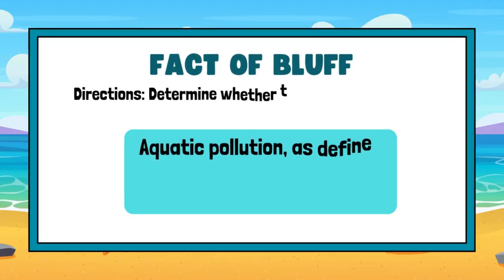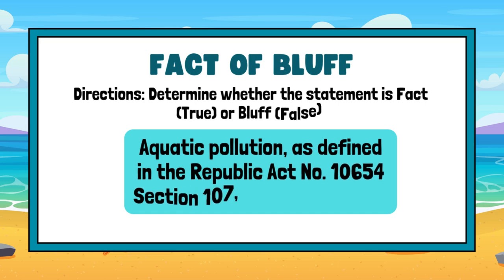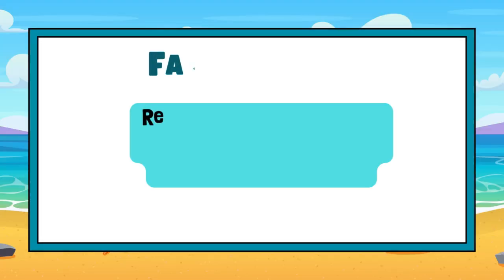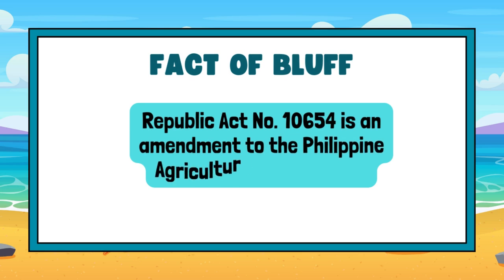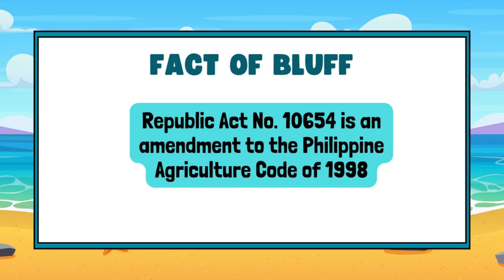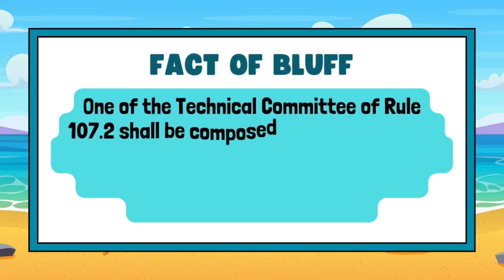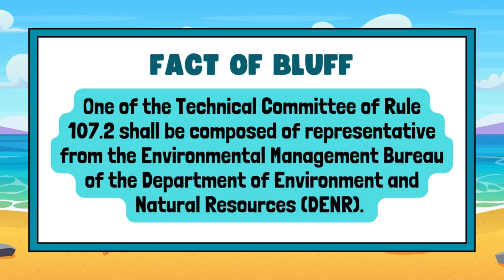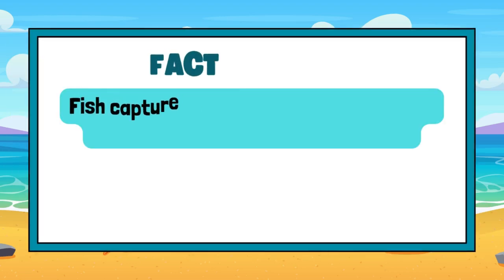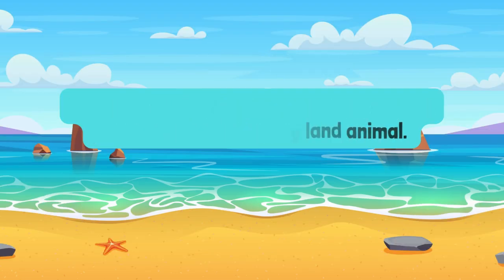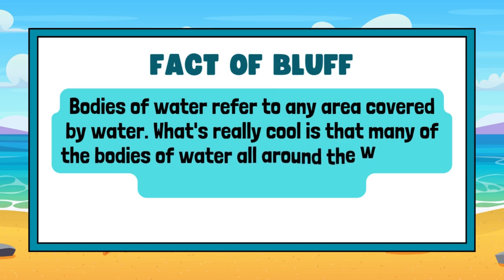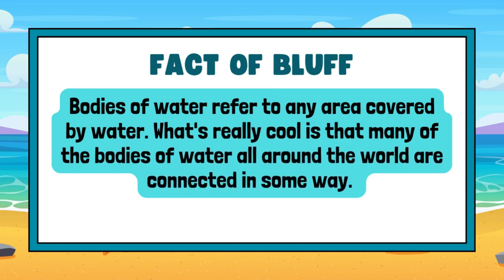Fact or Bluff. Directions: Determine whether the statement is fact (true) or bluff (false). Aquatic Pollution: as defined in Republic Act No. 10654 Section 107, shall be unlawful. Republic Act No. 10654 is an amendment to the Philippine Agriculture Code of 1998. One of the Technical Committee of Rule 107.2 shall be composed of a representative from the Environmental Management Bureau of the Department of Environment and Natural Resources (DENR). Fish capture technology encompasses the process of catching any aquatic animal. Bodies of water refer to any area covered by water, and many bodies of water around the world are connected in some way.